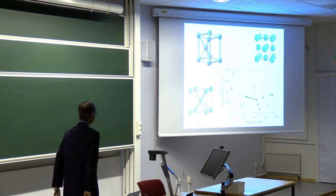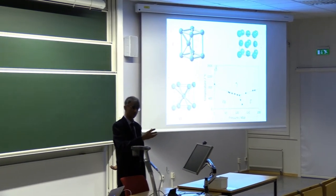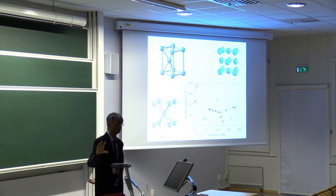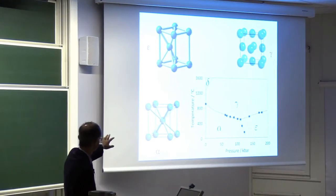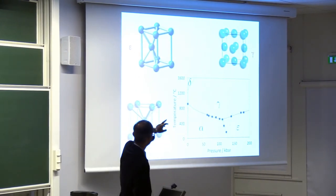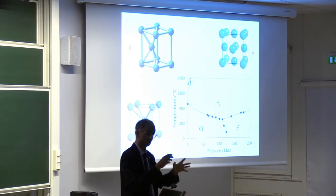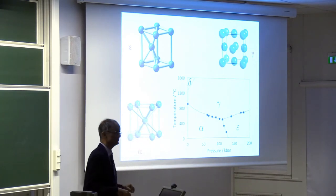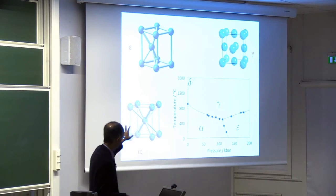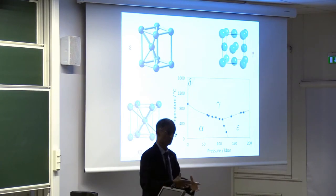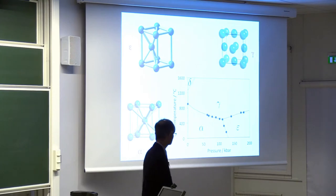Iron has many allotropes — that means the way in which the iron atoms are arranged. There are many variants, but the three most important are ferrite, which is body-centered cubic; austenite, which is face-centered cubic with atoms at the corners and centers of each face; and epsilon iron, which is hexagonal close-packed. In pure iron, epsilon only exists at very high pressures, about 130,000 atmospheres, which exist at the center of the Earth.